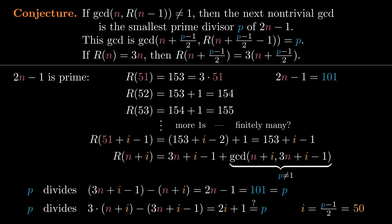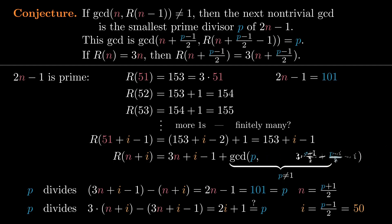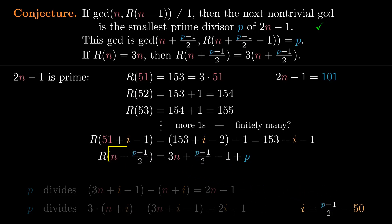Does that actually work? Let's compute the GCD and see. For i we have the potential value P minus 1 over 2. Since 2n minus 1 is P, n is P plus 1 over 2. So n plus i simplifies to P, and 3n plus i minus 1 simplifies to 2P. The GCD of P and 2P is P. So yes, this value of i works. It's the smallest value of i that produces a GCD that isn't 1, and that GCD is the smallest prime divisor of 2n minus 1 — the first part of our conjecture. Not only that, but this GCD appears in the computation of R(n + (P−1)/2), which is the second part. So when n equals 51, we don't see 1s forever; 50 steps later we see the next non-trivial GCD, and it is 101.